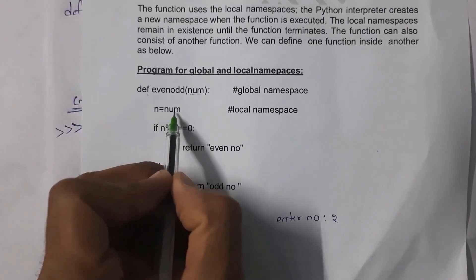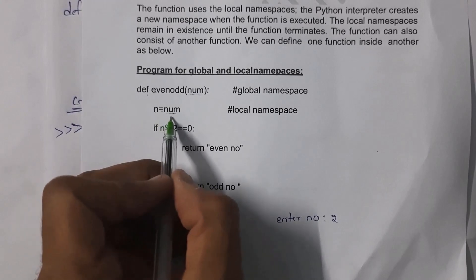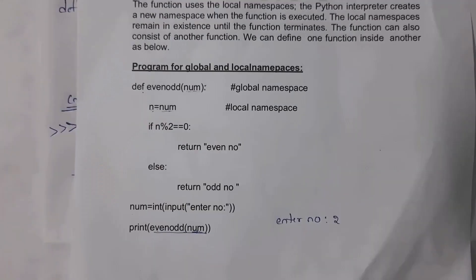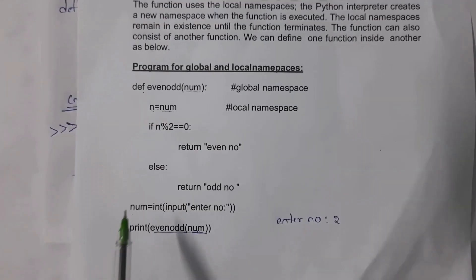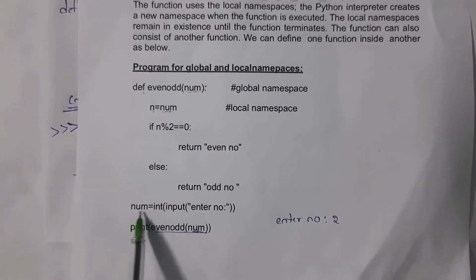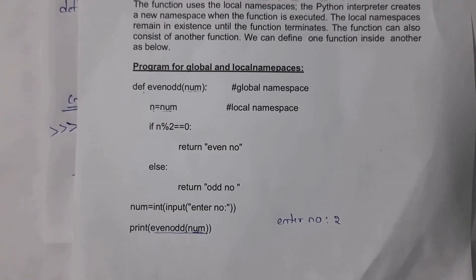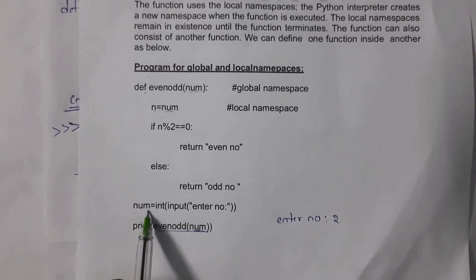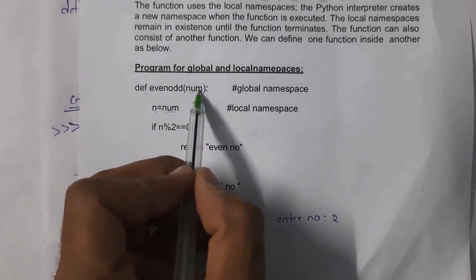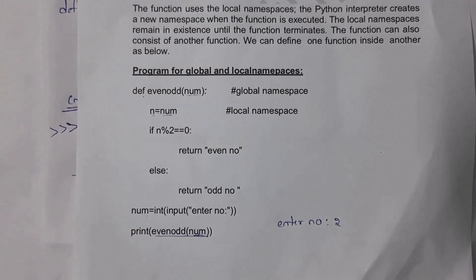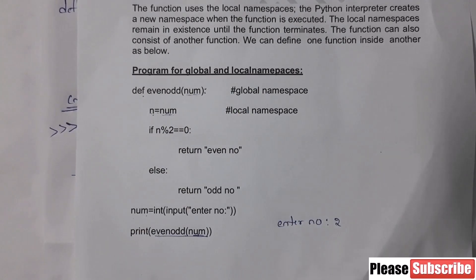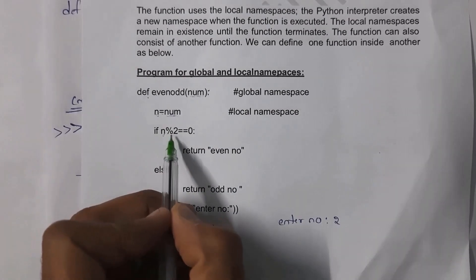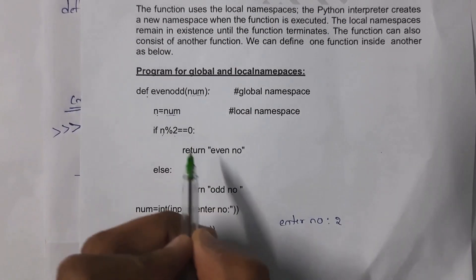Inside the function, I write n = num, which means I am assigning the value of num to a shorter variable name n. We call n a local namespace variable. Variables declared outside the function are global variables; variables declared inside the function are local variables. So num is the global namespace variable, and n is the local namespace variable.